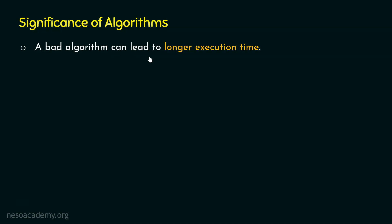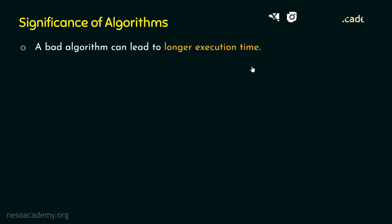A bad algorithm can lead to longer execution time. This means that if we convert a bad algorithm to its equivalent program and execute that program on our system, that program will take a lot of time to execute and give us the output. We don't want that. This is the meaning of a bad algorithm — when we convert it to its equivalent program, that program will take a lot of time to execute.